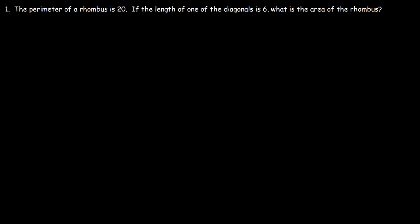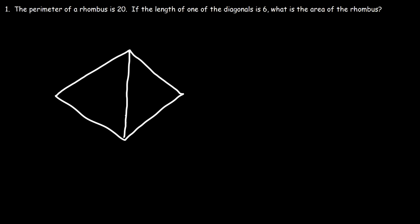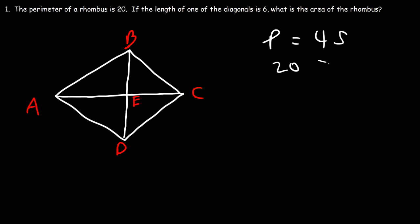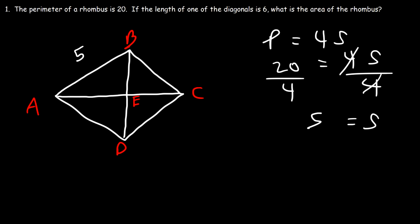New problem: the perimeter of a rhombus is 20 and one diagonal is 6 units long. What is the area? Since all four sides are equal, the perimeter is 4s, so 20 divided by 4 gives a side length of 5. If diagonal AC is 6, then AE is 3 and EC is also 3.